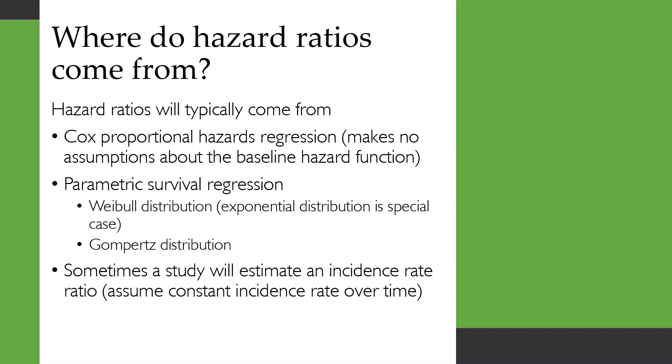So where do we actually get the hazard ratios from out of those data? They'll typically come from a Cox proportional hazards regression, which makes no assumptions about the baseline hazard function, or some kind of parametric survival regression, typically using a Weibull distribution or a Gompertz distribution, because those actually have proportional hazards parameterization. And the exponential distribution is just a special case of the Weibull distribution.